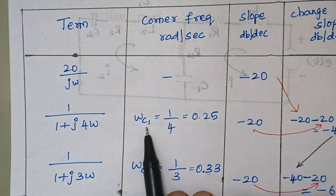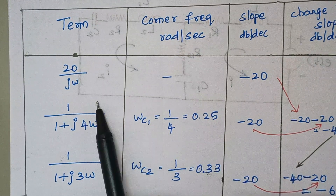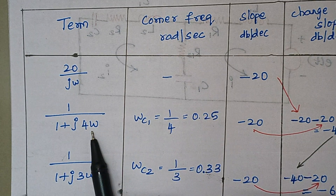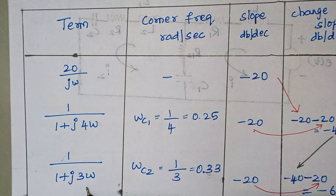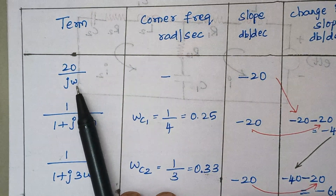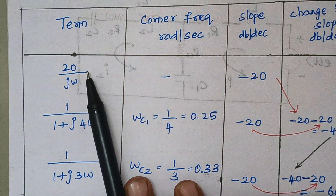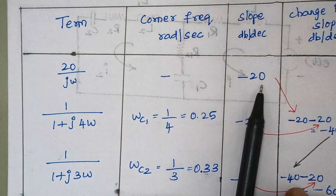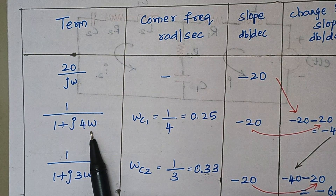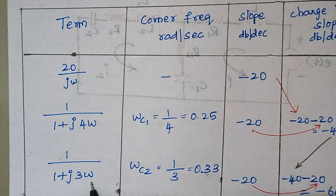The first corner frequency is 0.25 and the second one is 0.33. The term 1/(1 + j4ω) constitutes the 0.25 corner frequency, so write the term accordingly. Similarly, 0.33 is contributed by the term 1/(1 + j3ω). Moving to the slope: since ω lies in the denominator, each ω contributes a slope of −20 dB/decade. So this term contributes −20 dB/decade, and similarly for the other two terms.